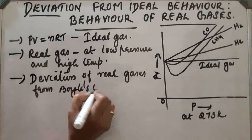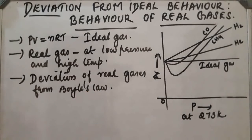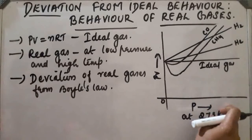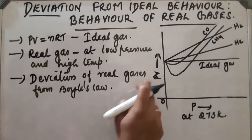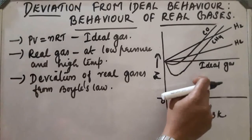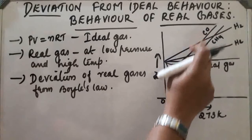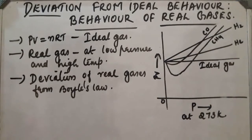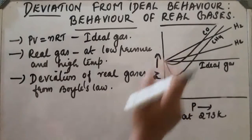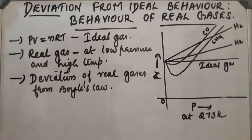According to Boyle's law, if we plot a graph of PV against P — with P on the x-axis and PV on the y-axis — an ideal gas gives a straight line parallel to the pressure axis. Different plots are obtained for different real gases such as carbon monoxide, CH4, etc., at 273 Kelvin.